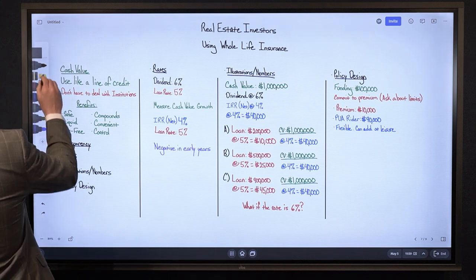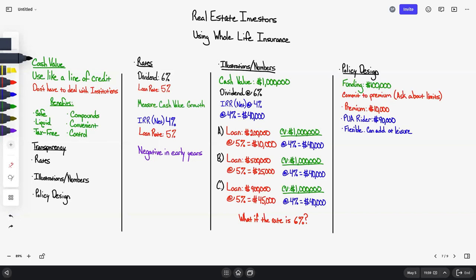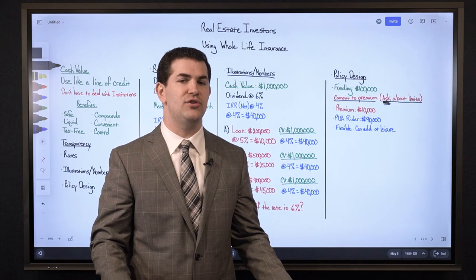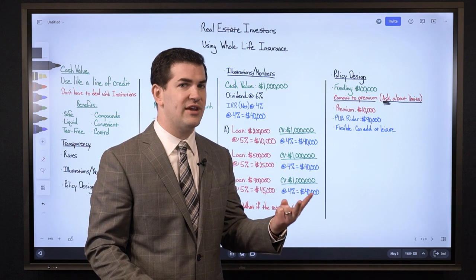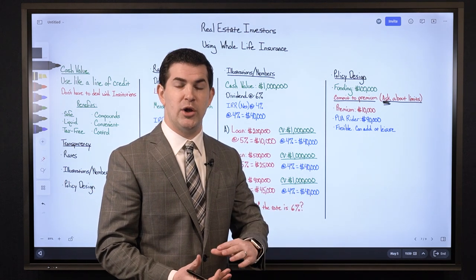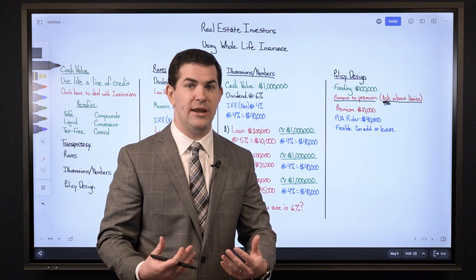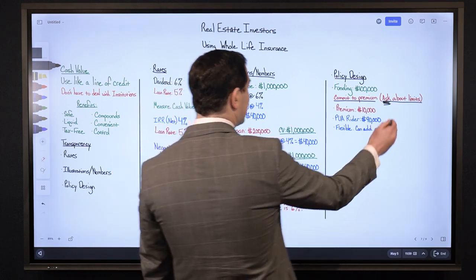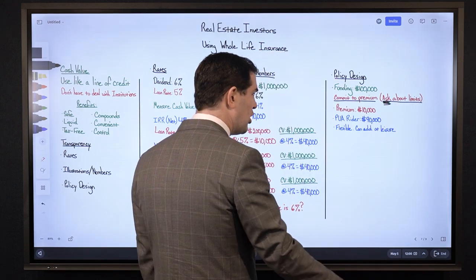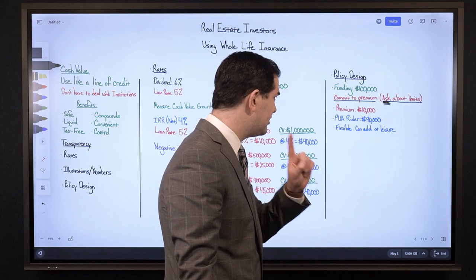Let's wrap up with policy design, because this is where it all starts. If this isn't set up right, it is the number one source of buyer's remorse. Let's assume you are funding a policy at $100,000 per year. The most important piece is to ask about the limits — specifically the premium and PUA limits the insurance company offers. Asking about those will force the agent you're working with to provide that information up front. If you don't ask, it may not be provided.